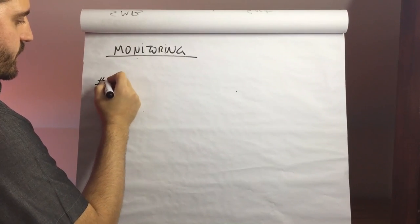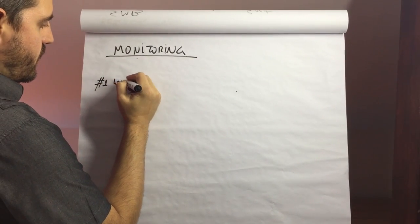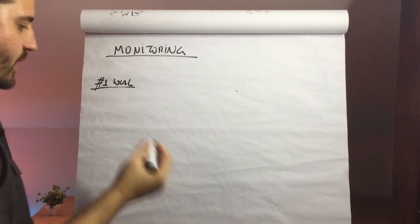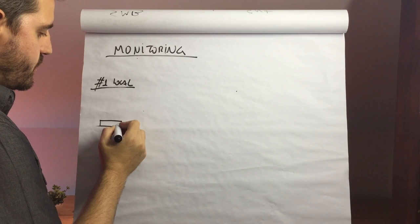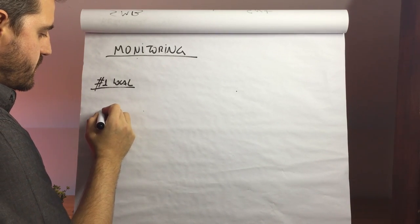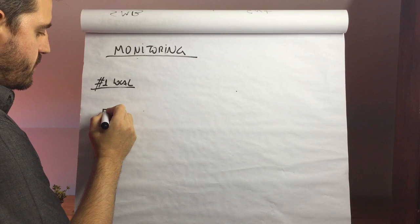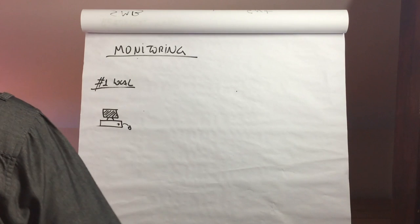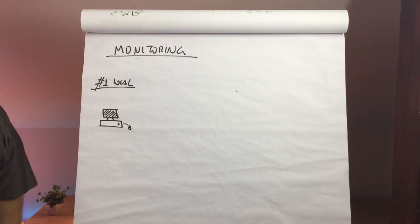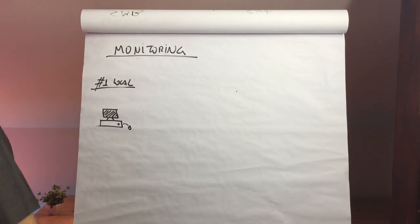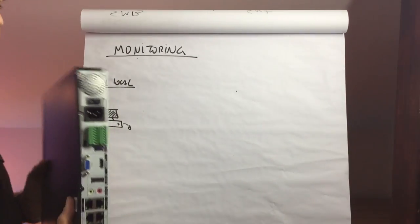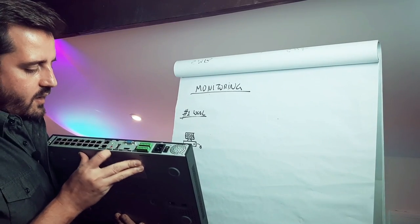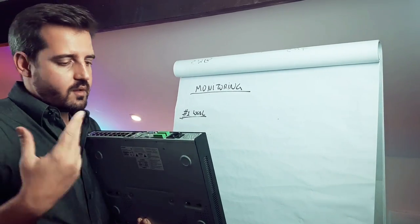The first monitoring option is local monitoring directly on the embedded NVR. The embedded NVR can handle basically all operations: image capture, recording, playback, and monitoring. It has USB ports where we can connect a keyboard and mouse.